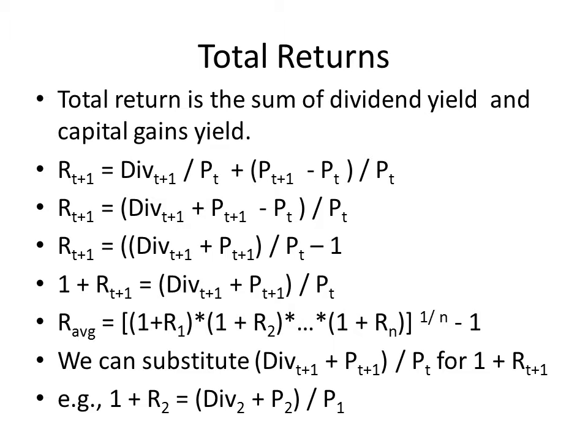All that t+1 means is occurring in the period after time t. So, for instance, if we were looking for R4 here, we would be dividing both of these things by P sub 3.